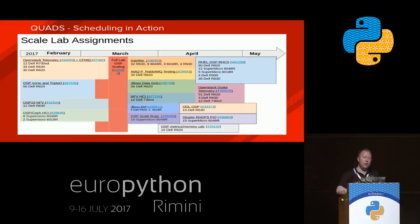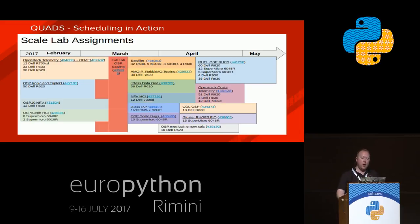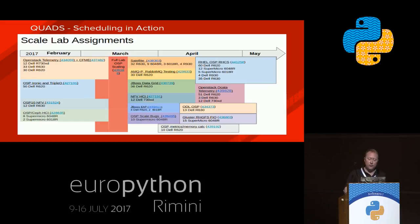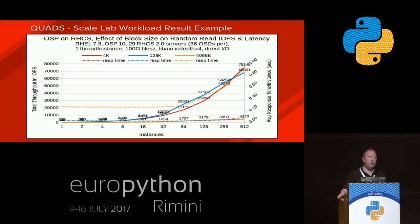Here's an example of the scheduling we do automatically, from February to May of this year. You can see how we've done back-to-back scheduling of all machines in the environment — four to five parallel running workloads testing different products, different scale, different aspects. All of this, when scheduled in advance, happens automatically. We don't ever have to waste time: there's a two-person team, we've got a lot of infrastructure, and we don't manually set up any of this. Here's an example of some metrics from the lab — a storage workload and some results we get out of the Scale Lab. Quads empowers us to do this sort of work.